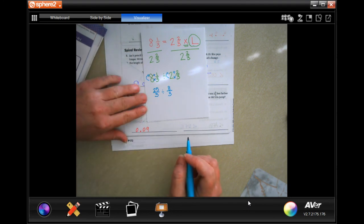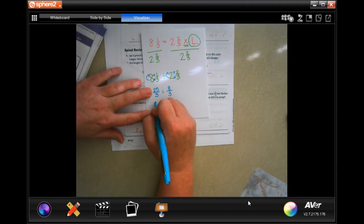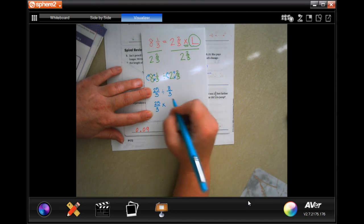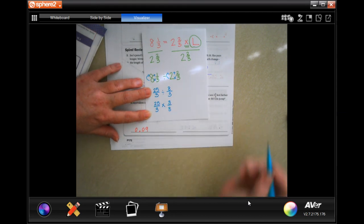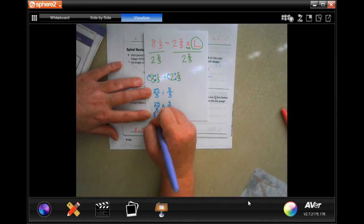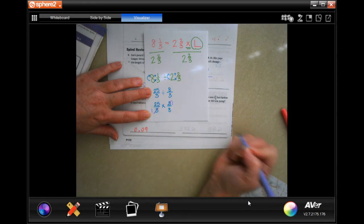When we are dividing fractions, we keep the first one, we change the sign to multiplication, and we flip the second fraction.